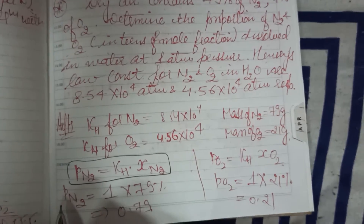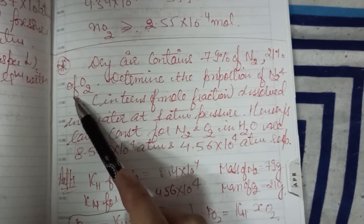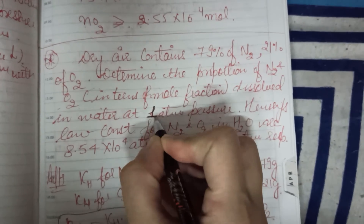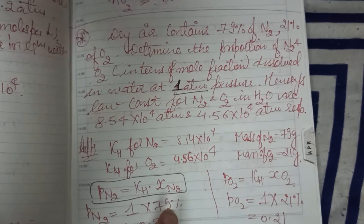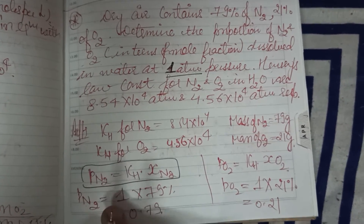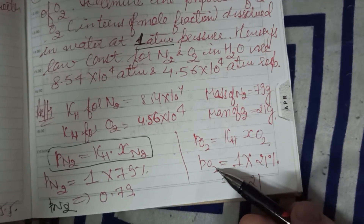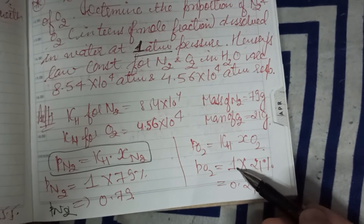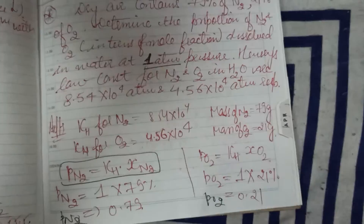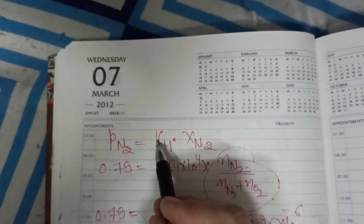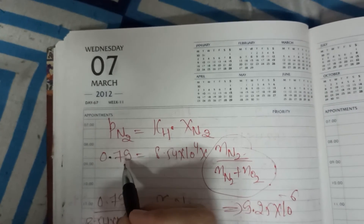Since different Henry constants are given for nitrogen and oxygen, we calculate their partial pressures separately. Partial pressure of nitrogen = kH × mole fraction of N₂, and partial pressure of oxygen = kH × mole fraction of O₂. Total pressure is given as 1 atmosphere. So partial pressure of nitrogen = 1 atm × 79% = 0.79 atm, and partial pressure of oxygen = 1 atm × 21% = 0.21 atm.